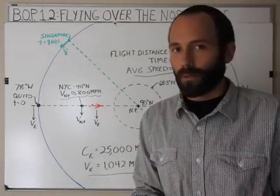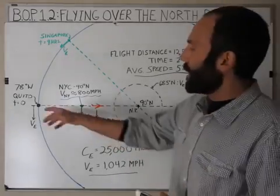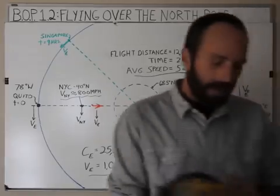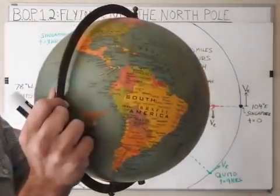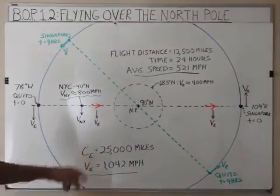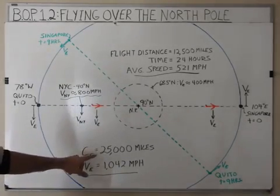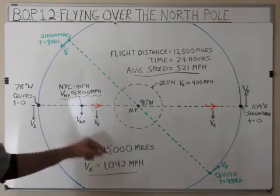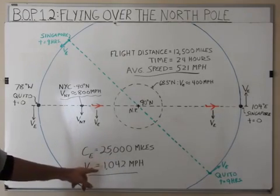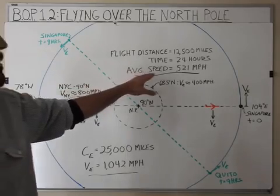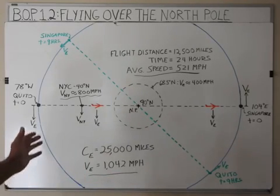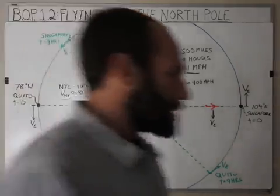I looked it up — the longest flight ever was four days, probably refueled in the air, but a plane could be outfitted to fly from Quito to Singapore. Now, when the plane is sitting on the runway in Quito facing north, the Earth is rotating. 25,000 miles circumference divided by 24 hours gives you an instantaneous velocity at the equator of 1,042 miles per hour. You'll notice for the plane I wrote 'speed' instead of 'velocity,' because in physics speed is just a rate, whereas velocity is a rate and a direction — a vector.